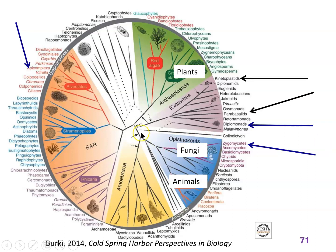This is a tree that doesn't have a root, and the branch lengths aren't meaningful here. Instead, what we look at is how far the branches are from the edges. For example, this line and this line have their branch point here, so we could think of their common ancestor as being a certain distance back in time, whereas another pair's common ancestor is all the way back here. We don't measure the lengths on this kind of tree — it's really just showing us the relative locations of the branch points and the groupings.